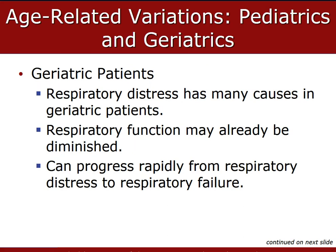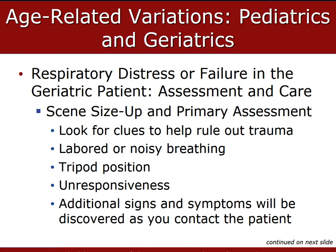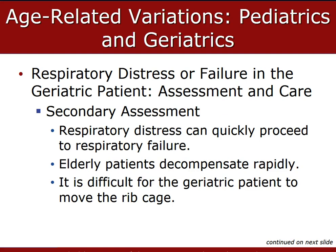The chest wall is more compliant in pediatric patients and less compliant in geriatric patients, so diseases can progress rapidly from respiratory distress to respiratory failure. The signs and symptoms of respiratory distress usually briefly precede respiratory failure in geriatric patients, who do not have the same compensatory mechanisms. Signs include increased use of accessory muscles, sternal and intercostal retractions during inspiration, tachypnea, tachycardia, nasal flaring, prolonged exhalation, frequent coughing, cyanosis, anxiety, confusion, and an inability to speak in full sentences.